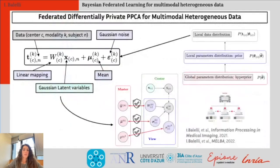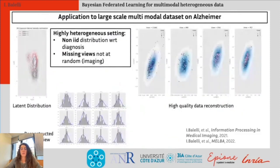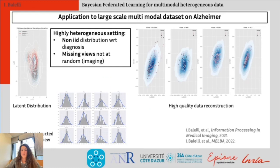We also showed that a differential privacy mechanism could be added in a very natural way to improve data privacy, which is one of the major concerns addressed through federated learning. We applied this method to a multimodal clinical dataset with imaging data from Alzheimer's disease. An important point is that at the end of training, each center receives the final federated model, and if it has missing modalities in its local dataset, it will be able to generate them thanks to the federated model.